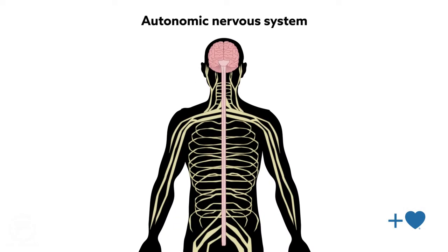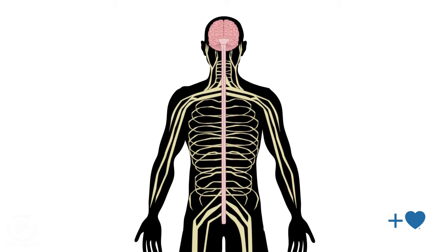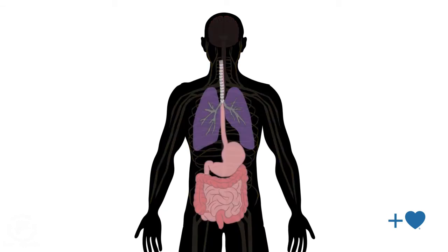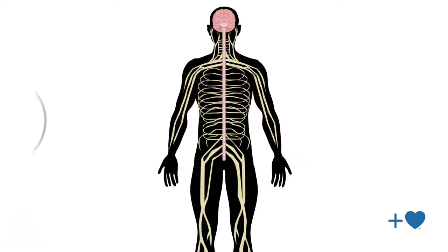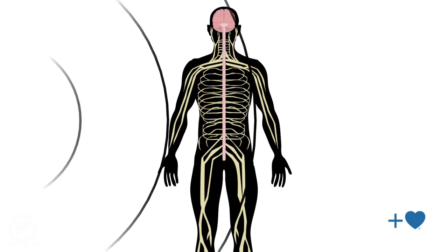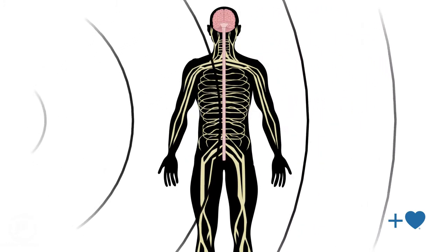To answer this question, researchers have turned to the autonomic nervous system, the subconscious control system that regulates bodily functions such as breathing and digestion. Their findings suggest that our nervous systems are well attuned to the energetic fluctuations that ripple through our solar system.